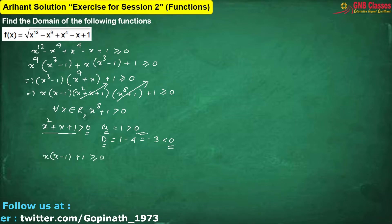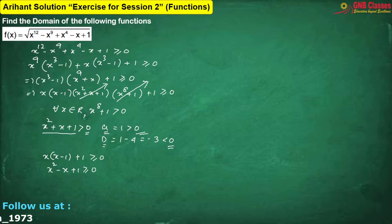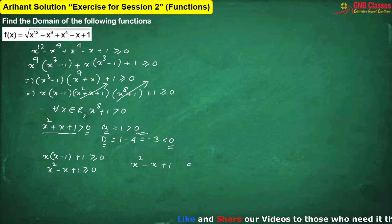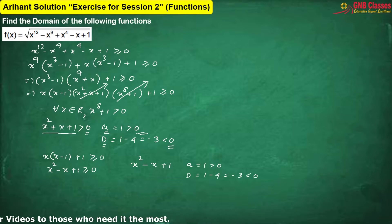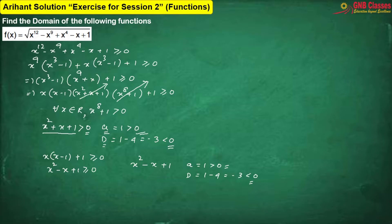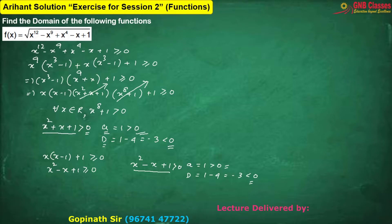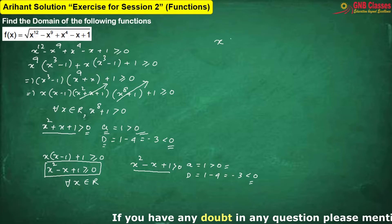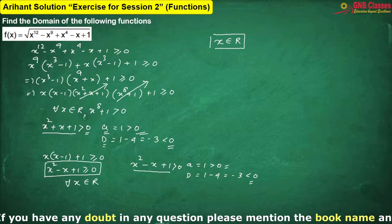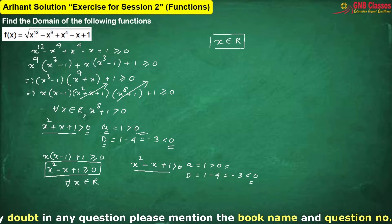For x²-x+1, again a=1 > 0 and discriminant equals -3, which is less than zero, so this expression is always greater than zero. Therefore, this condition is satisfied for all real x. Hence, the domain of the function is x ∈ ℝ (all real values). Let us move to the next problem.